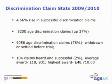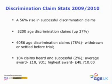I will give you some background statistics on discrimination, which is your area of expertise. In 2009-2010, there was a 56% rise in successful discrimination claims. There were 5,200 age discrimination claims, up 37% from 2008-2009. Of those, 4,056 age discrimination claims — that's 70% of the total figure — were withdrawn or settled before trial.